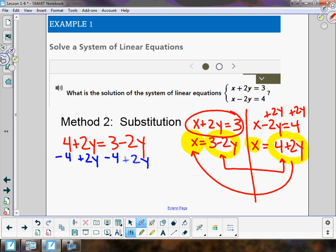I'm going to get 4y equals negative 1. Subtracting 4 gives me negative 1. Adding 2y cancels and gives me 4y. When I divide both sides by 4, y would end up being -1/4.